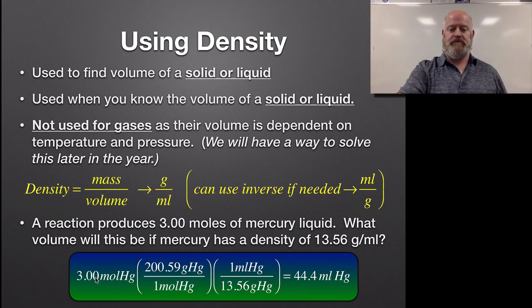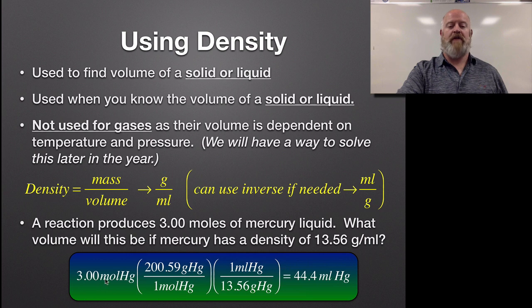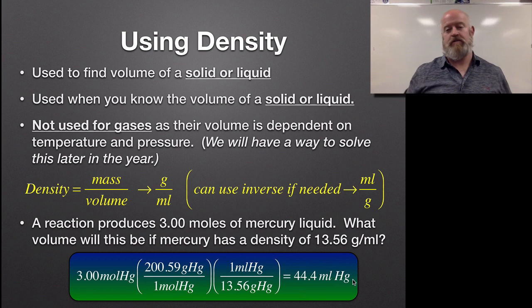We can only start with moles, so that's what we knew, and we can convert from one mole of mercury to grams of mercury. Because our ultimate goal here is what volume will this be. So we're looking for a volume, but we don't have a way to go from moles directly to volume. So our first step is to go from moles to grams. And then using density, we can say there's 13.56 grams per milliliter and solve it. So essentially what this does is we add a step to our stoichiometry.